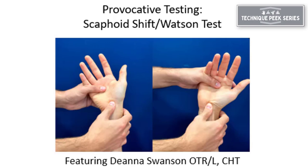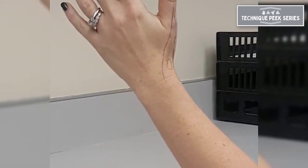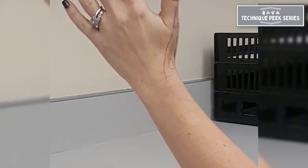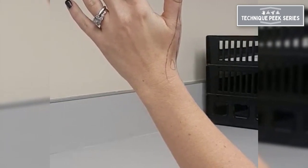Today we're going to learn how to do the scaphoid shift test, or also what's known as a clunk test. A clunk because when the scaphoid shifts in and out of its placement, indicated by a ligament injury, an audible clunk is made.